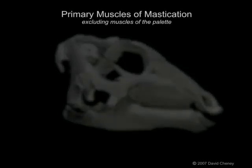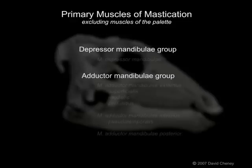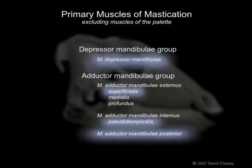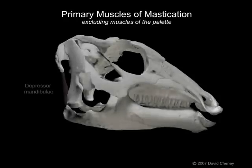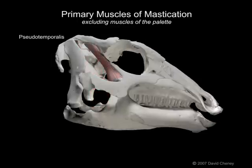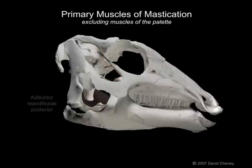The primary muscles of mastication are divided into two groups: the depressor mandibulae group and the adductor mandibulae group. Following descriptions from Ostrom and Weishample, some of the key muscles of these two groups were reconstructed on the undescribed hadrosauroid skull. The depressor mandibulae muscle functioned to open the jaw, while the adductor mandibulae externus muscles, represented here by superficialis, the adductor mandibulae internus muscles, represented here by pseudotemporalis, and the adductor mandibulae posterior all contributed to closing the jaw through adduction of the dentary bones.